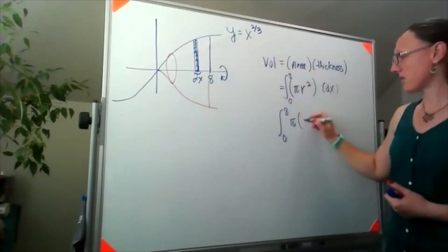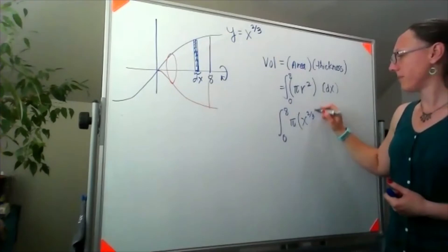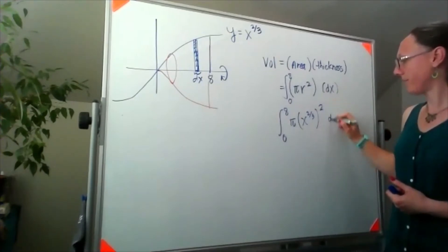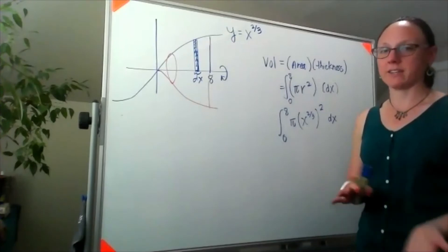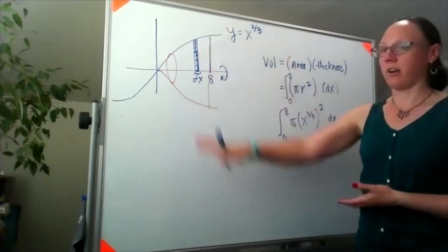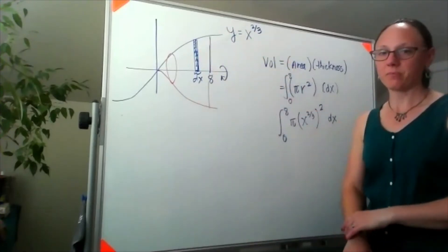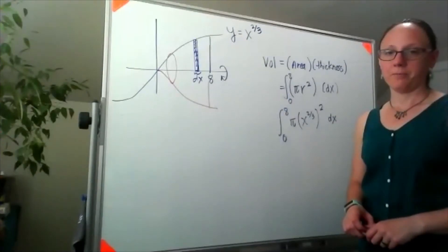In particular, it's the y value that corresponds with this function, so that radius piece would be x to the 2/3 power. In general, I'm gonna find that radius by looking on our picture.